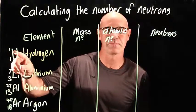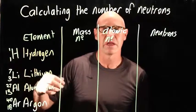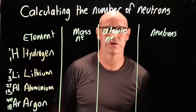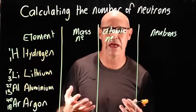From this little symbol here, we're able to work out the atomic number, the mass number, and also the number of neutrons in an atom.